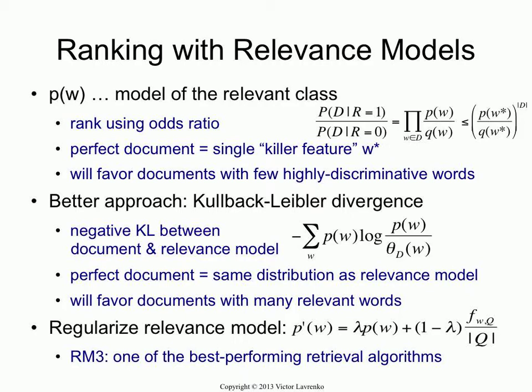As a parting shot: the basic model is just pw, but it turns out that if you regularize pw — if you interpolate it with the frequencies of words in the original query — that ends up giving you slightly better performance than pw by itself. This is just an empirical observation. If you rank by this formula, you get something called RM3, and that's one of the best performing retrieval algorithms out of the box. If you don't use PageRank, anchor text, or web features — if you just have a corpus and a query — then one of the best ways to rank documents is RM3.